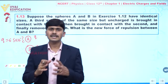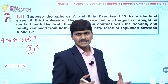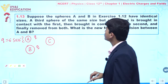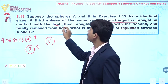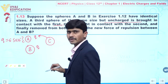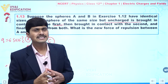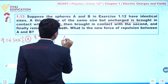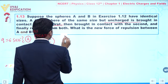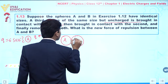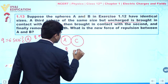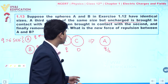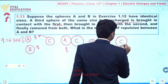Now, let's suppose we are bringing another sphere C which is uncharged but having the same size. It is given that the third sphere is first brought in contact with A. Since both spheres are having identical sizes, after touching, the charge is equally distributed. So A had charge Q and C had 0; finally A gets Q/2 and half the charge transfers to C, so C also gets Q/2.